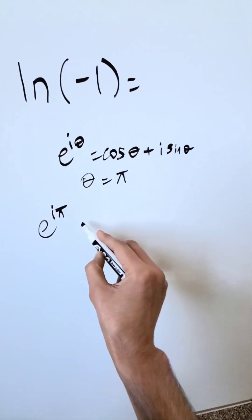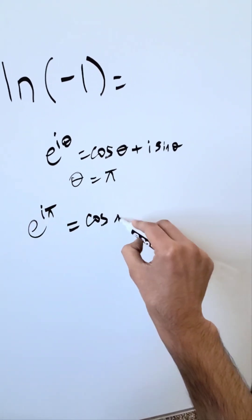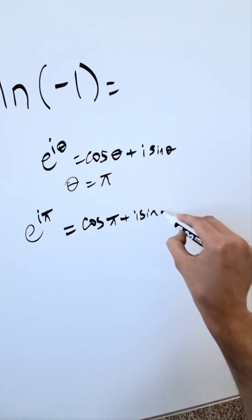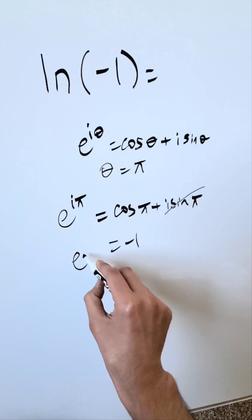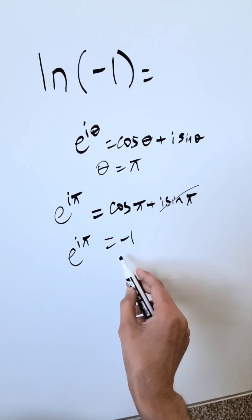E to the power of i pi, or pi i, it doesn't matter, is equal to cosine pi plus i sine of pi. You know this here is 0, but cosine pi is equal to minus 1. So I'm seeing here E to the power of i pi is equal to minus 1.